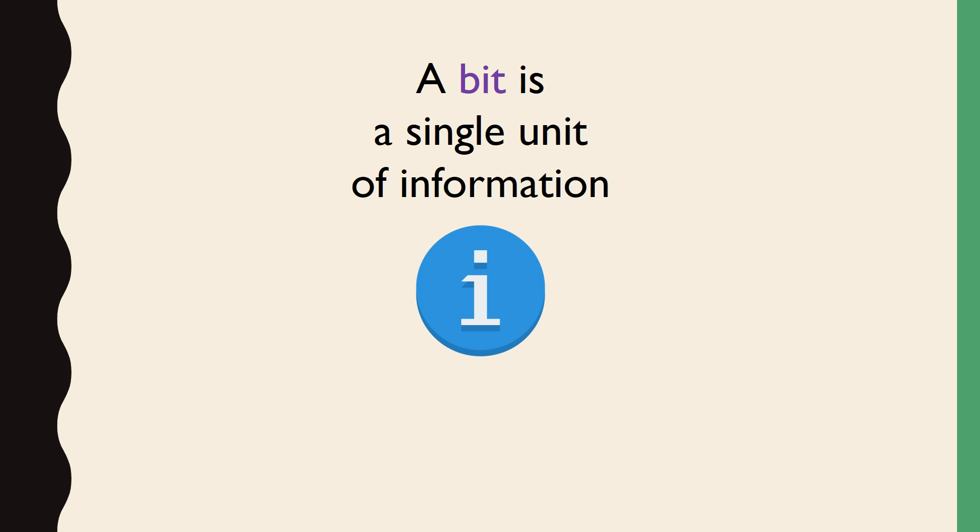For example, this circular object here that we'll use to represent bits in this video has a color property, which currently holds the value blue. Essentially, the value blue is stored on this object in some physical way. In this particular example, the value blue is stored both digitally in the red-green-blue color combination that makes up the color in software, and physically in the hardware components of your screen, which allow you to see a blue object.